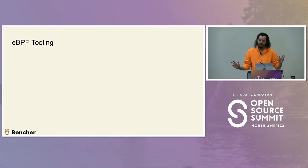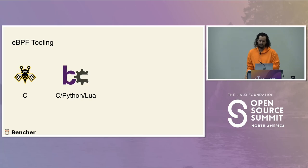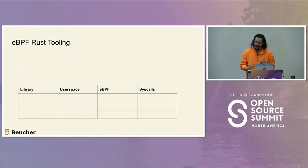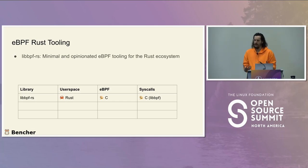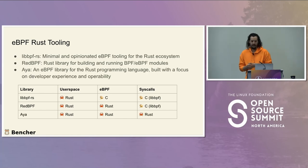High-level eBPF tooling that exists: there's libBPF, written in C. There's BCC, which is C, Python, and Lua. There's also some Go tooling, and there's Rust — which, as you might imagine, we're going to go with. Within the Rust ecosystem, there's libBPF-RS, a Rust wrapper around libBPF where you still write eBPF code in C. There's redBPF, which lets you write eBPF code in Rust, but it's no longer actively maintained because the creator built AYA, which allows you to write both the kernel and user space code in Rust and replaces libBPF entirely.